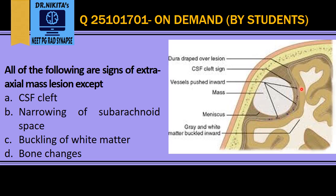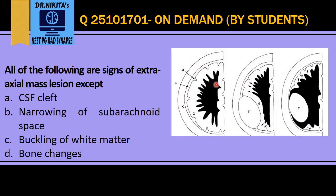There is grey matter and white matter which is buckled inwards because of the mass effect by this mass. So all of these are signs: CSF cleft, and widening of subarachnoid space is a sign — narrowing is not a sign. Buckling of white matter — these are the normal white matter and this is the grey matter, and an extraaxial mass causes buckling of the grey matter and white matter. Buckling means that the white matter is crowded.